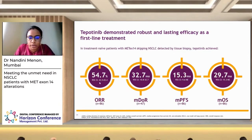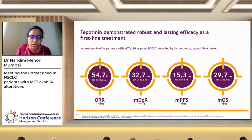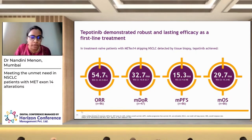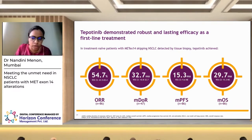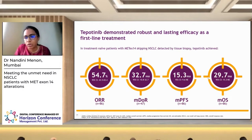To summarize the first-line results: the overall response rate was 54.7%, with complete or partial response seen in half the patients. Duration of response was 32 months (nearly three years). Median PFS was 15.3 months and median OS was 29.7 months. By comparison, if MET were not detected and patients were treated with chemotherapy alone, average OS in lung cancer with chemotherapy is around 8 to 10 months — far lower than what is achieved with tepotinib.